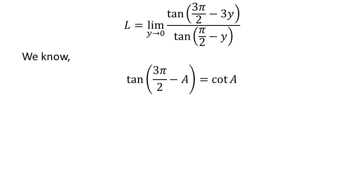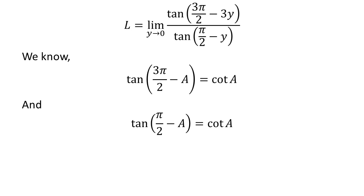We know the trigonometric identity tangent of 3 times (half of pi minus a) is equal to cotangent of a. This identity has been verified in a linked video. We also know the trigonometric identity tangent of (half of pi minus a) is equal to cotangent of a. Application of these identities gives us L is equal to the limit of cotangent of 3y upon cotangent of y as y approaches 0.